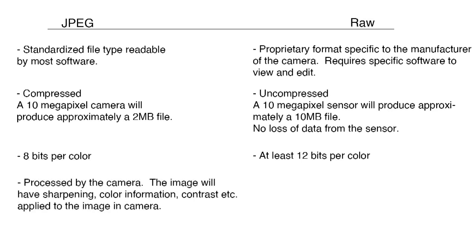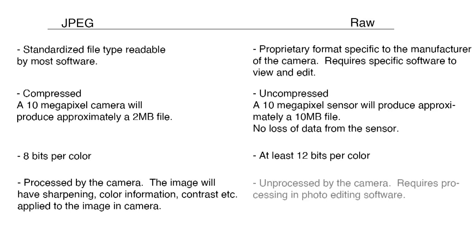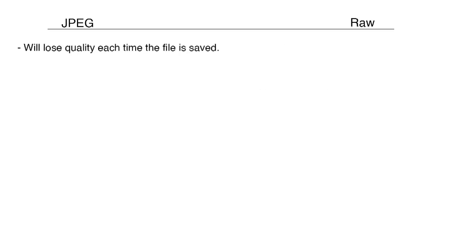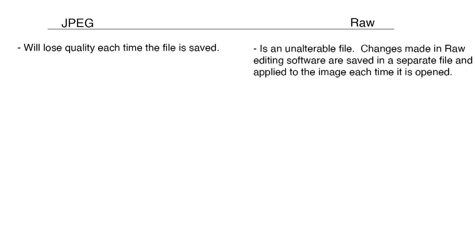JPEGs are processed by the camera — sharpening, color information, contrast, etc. are applied to the image in the camera. RAW files are unprocessed by the camera and require processing in photo editing software. JPEGs will lose quality each time the file is saved. A RAW file is an unalterable file; changes made in RAW editing software are saved in a separate file that's applied to the image each time it's opened.